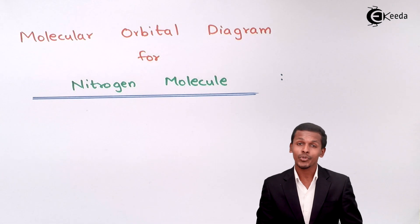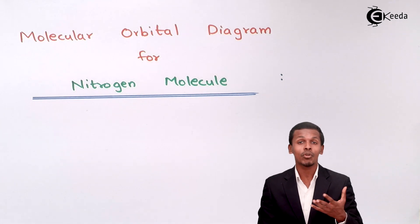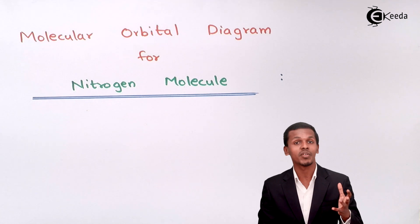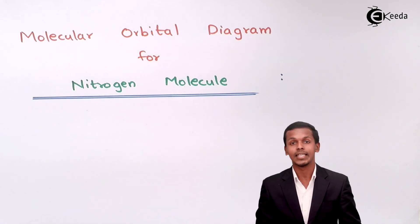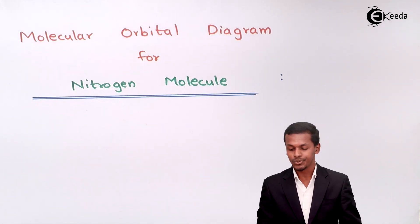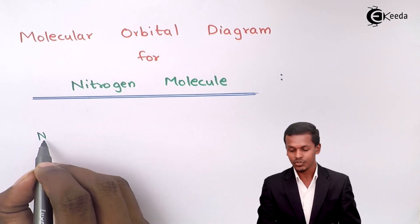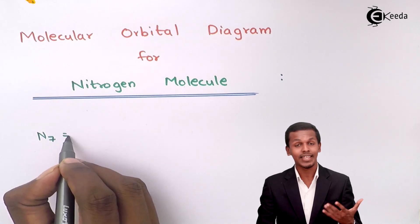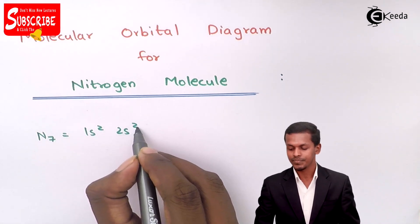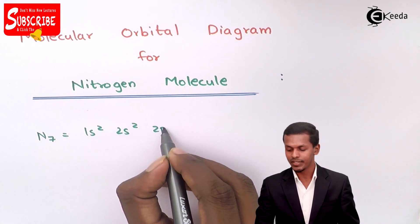So now we are going to talk about the molecular orbital diagram for the nitrogen molecule. But before that we should understand how we can represent the atomic orbital for the nitrogen atom, as well as how we can write the electronic configuration for nitrogen. So nitrogen has an atomic number of 7, which can be represented as 1s2, 2s2 and 2p3.